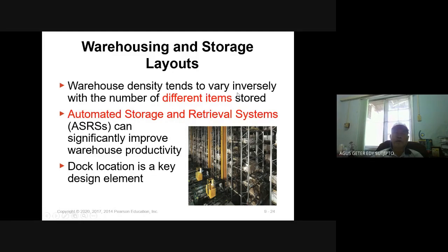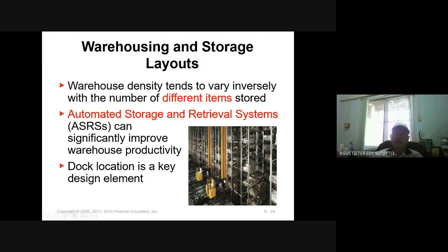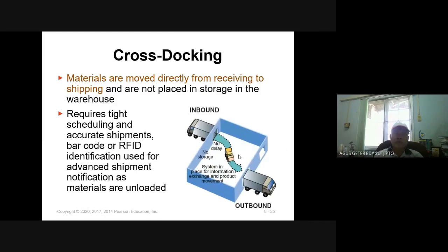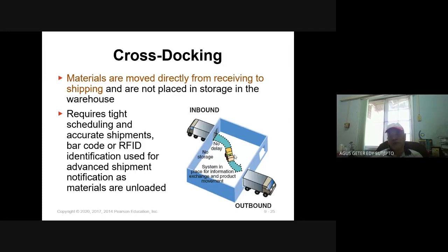In the warehouse, we use the Automatic Storage and Retrieval System (ASRS) to store and retrieve goods or items. You can use the space from bottom to upper part — we should use all space for placing items in the warehouse and not let any space go unused. The warehouse density tends to vary inversely with the number of different items stored. ASRS uses automation to make the layout more efficient and effective. Sometimes in the warehouse we use cross-docking — material moved directly from receiving to shipping.